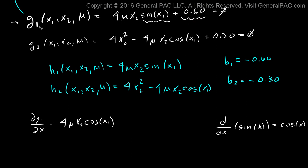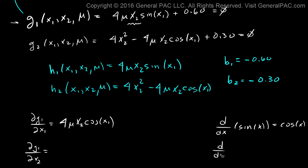The constant term goes to 0. So now we have to take the partial derivative of dg1 with respect to dx2. We're taking the same equation, but now we take the derivative with respect to x2. Keep in mind that x2 is the only term affected by this partial derivative. Also keep in mind that the derivative of just x equals 1. So taking the derivative of this term with respect to x2 gives 4 times u times 1 — since the derivative of x2 is just 1 — times sine of x1.